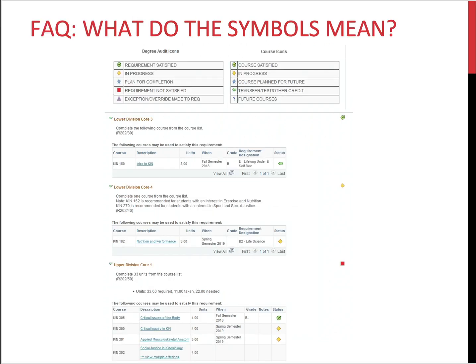Now let's discuss some frequently asked questions. What do the symbols mean? A green circle with a check means the requirement has been met. A yellow diamond means the course or requirement is in progress — you're currently enrolled, registered for a future term, or waiting on a grade to post. A red square means the requirement has not yet been met. A purple triangle means an exception has been made, and a green arrow means the course used was a transfer course or other transfer credit.